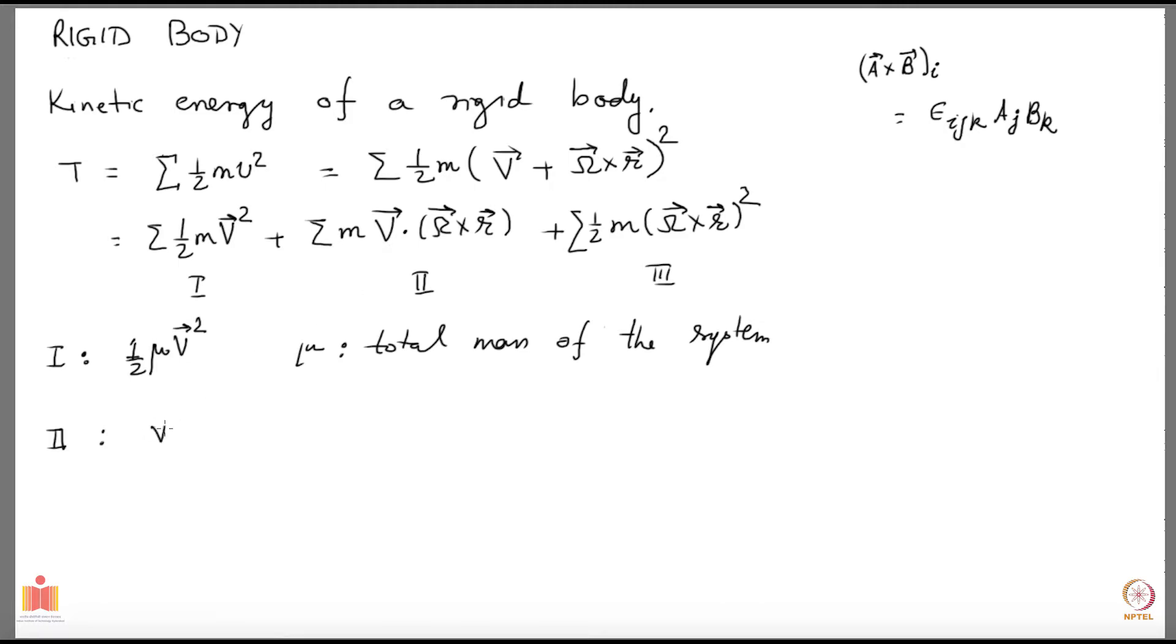You have v dot omega cross r which means this is vi then omega cross r over i. There is a summation over i. Then you have vi, ith component of omega cross r would be epsilon ijk omega j rk. That is the quantity we have.